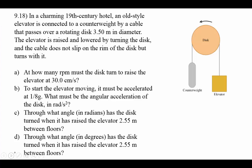Problem 9.18: a counterweight elevator setup. The radius of the disc is 3.5 meters from center out. The elevator is raised and lowered by turning the disc, and the cable does not slip. To raise the elevator at 30 centimeters per second, the disc must rotate so the tangential velocity also equals 30 centimeters per second. Using v tangential equals r omega.